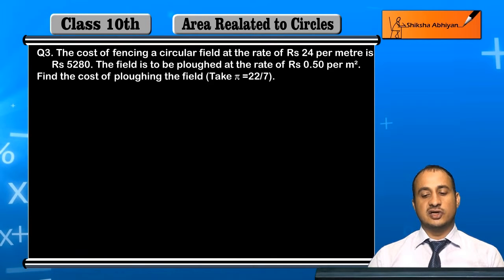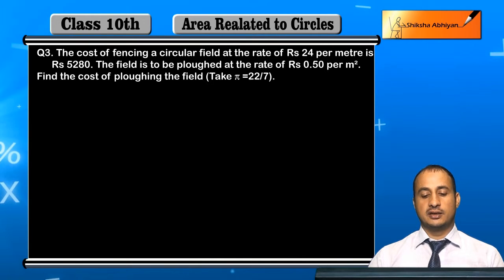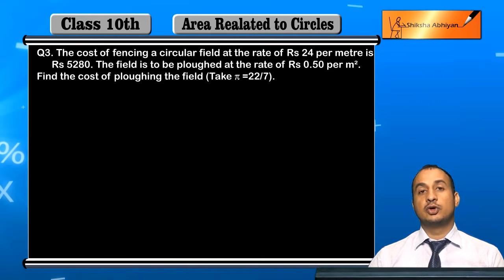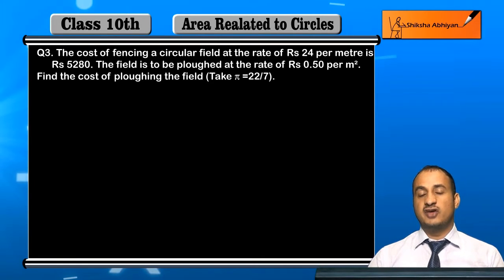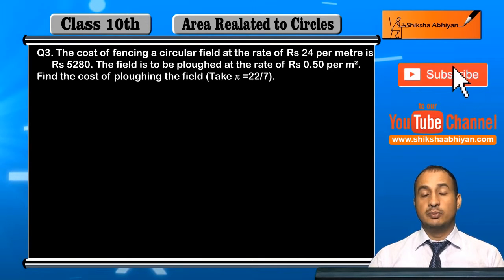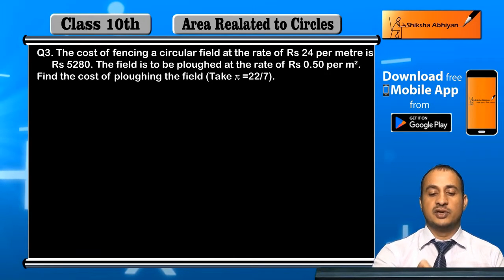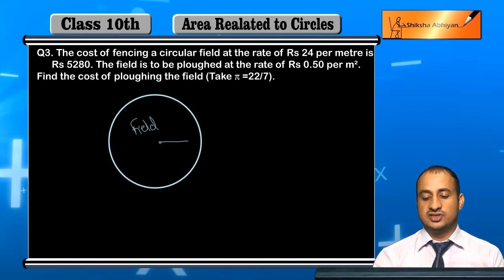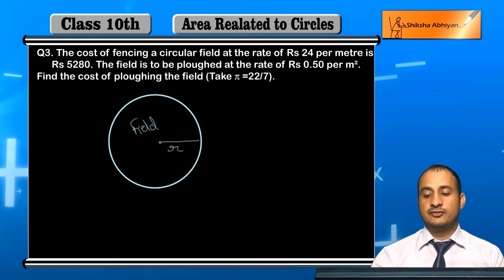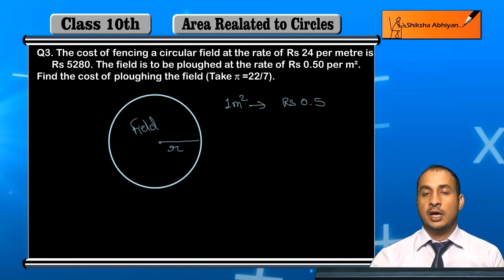If the circular field is to be plowed at the rate of Rs 0.5 per meter square, then find the total cost of plowing the field.